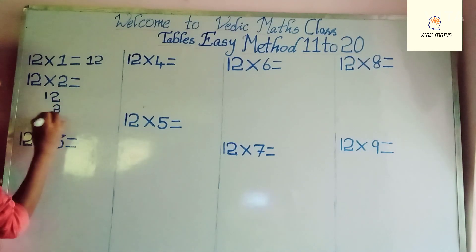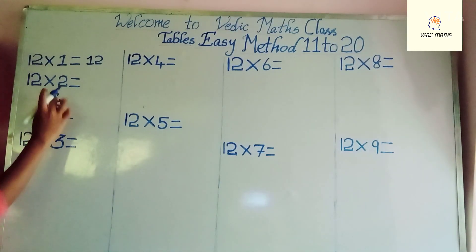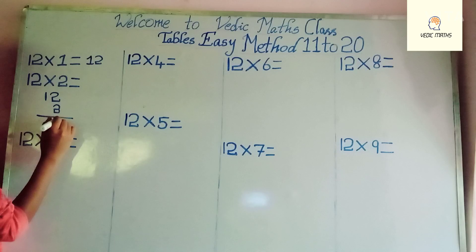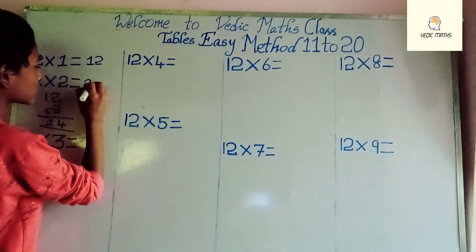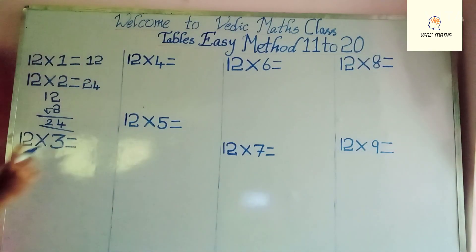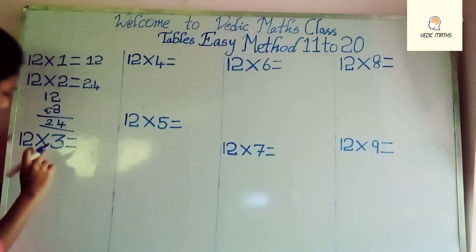2 2's are 4, write the multiplier 2 here, that's 24. And 12 into 3 is 3 2's are 6, write the multiplier 3 here, that's 36.